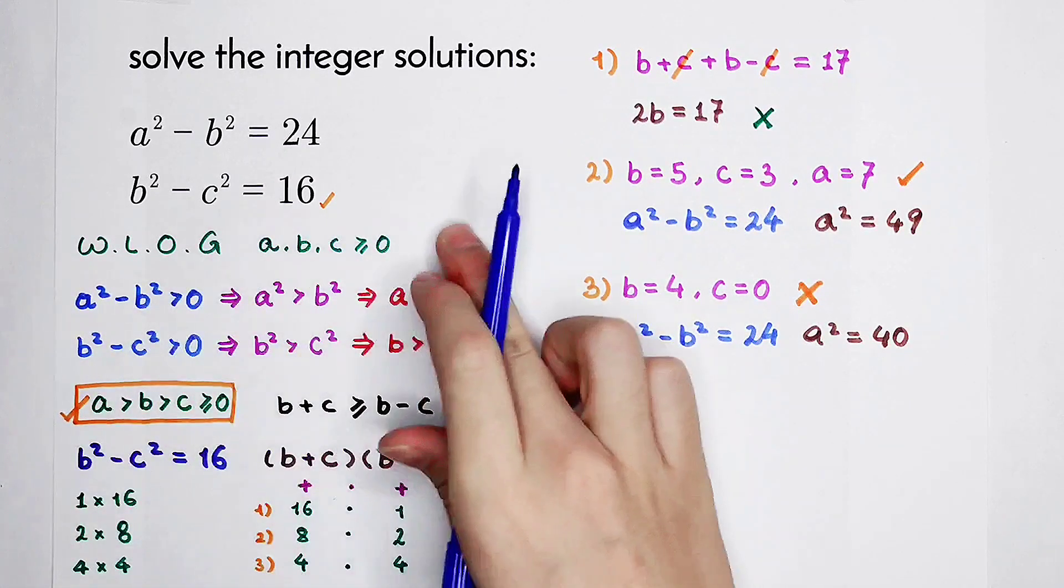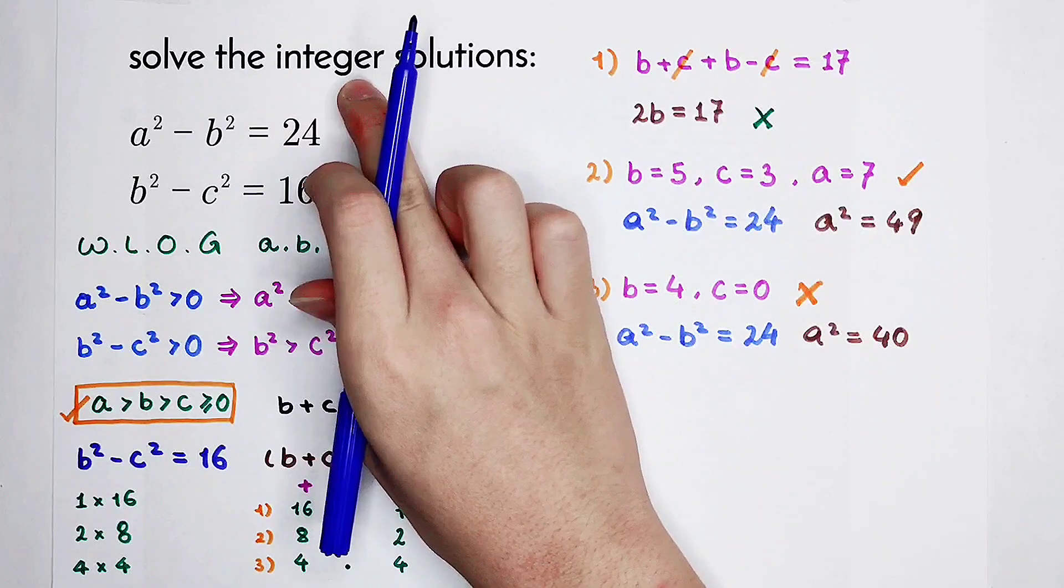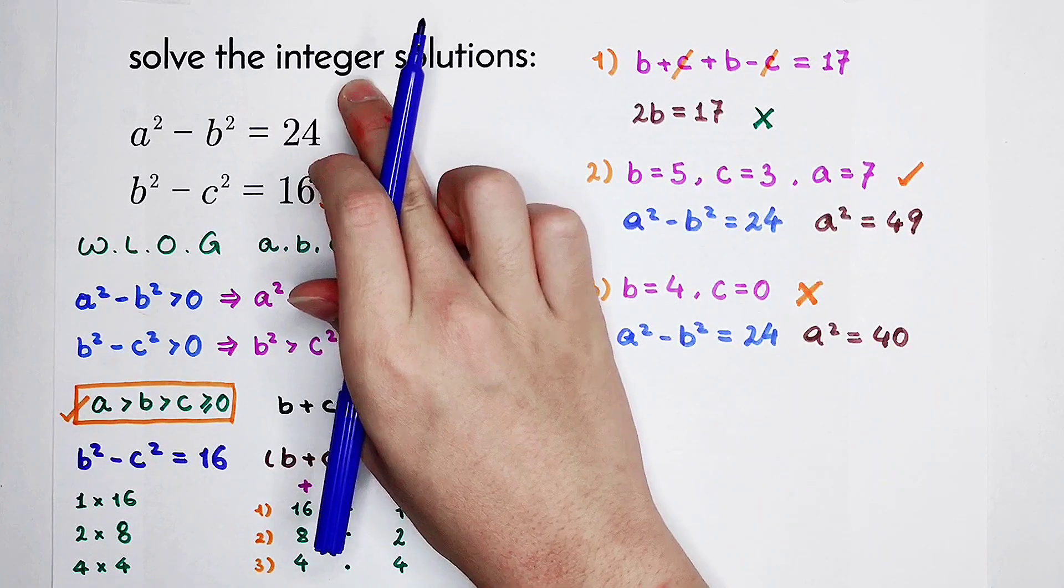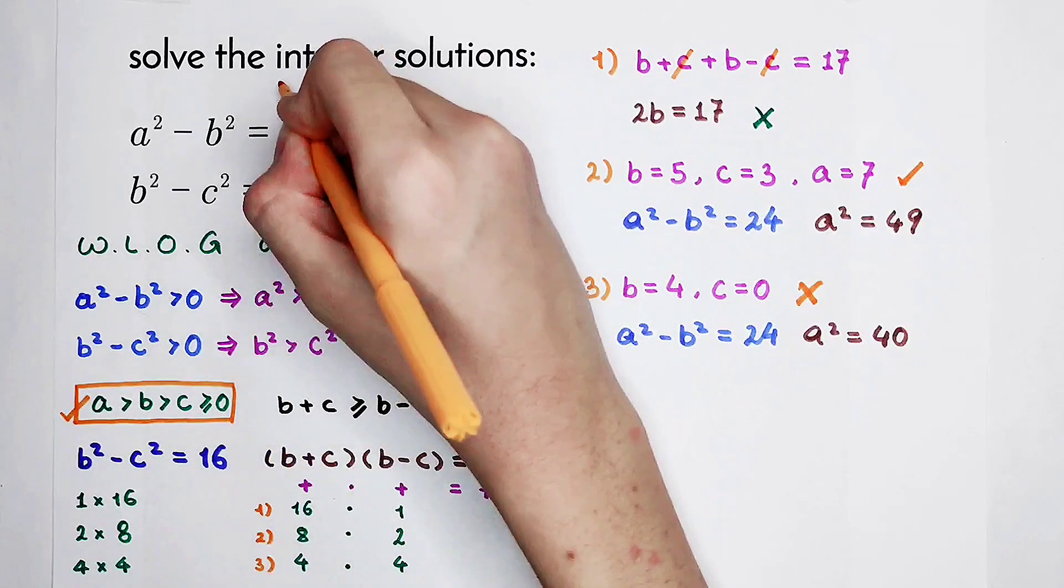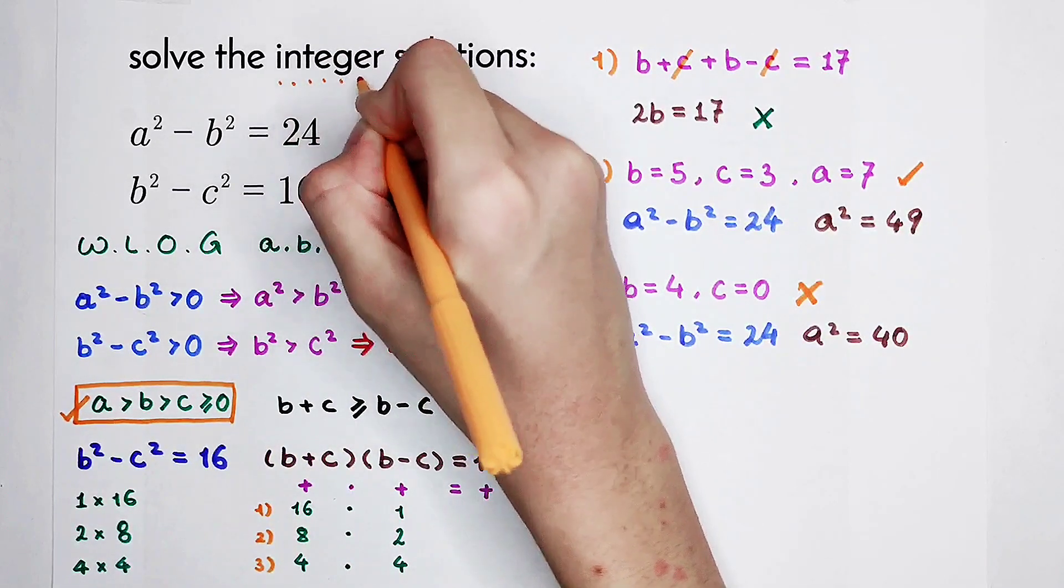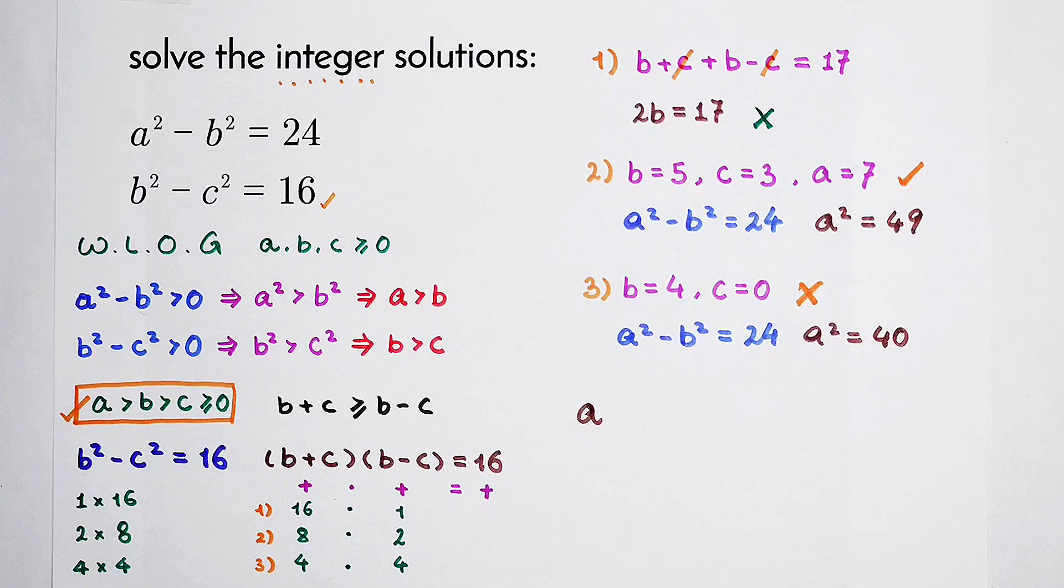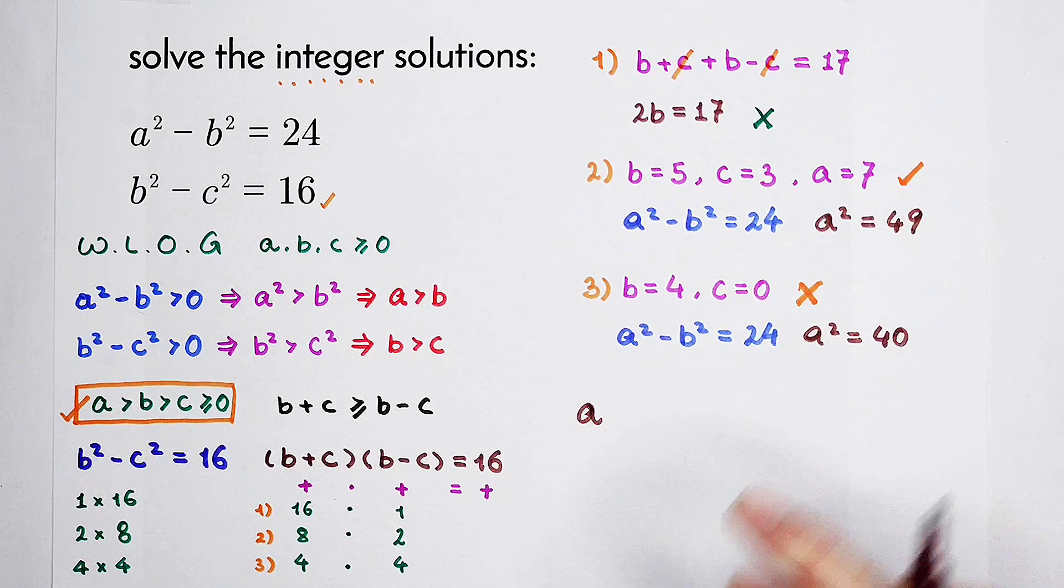But now, a, b, and c are all integers, not non-negative integers or positive integers. They are integers. In each solution, we can add a negative sign before it.